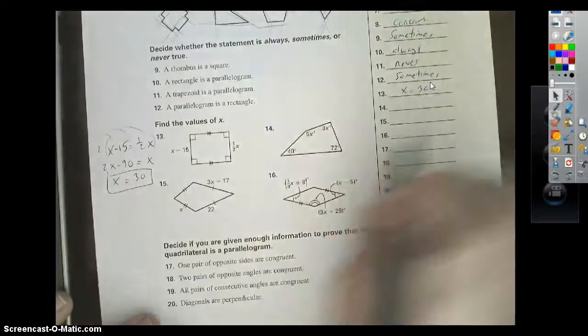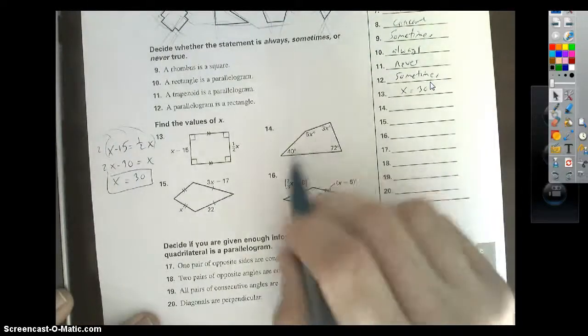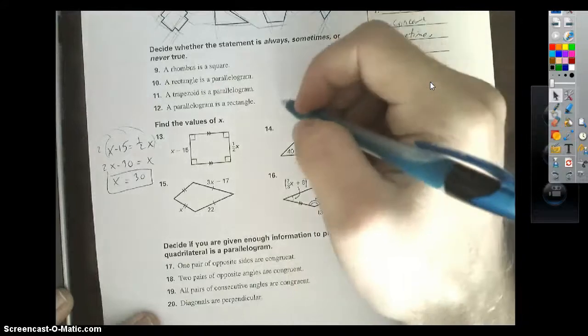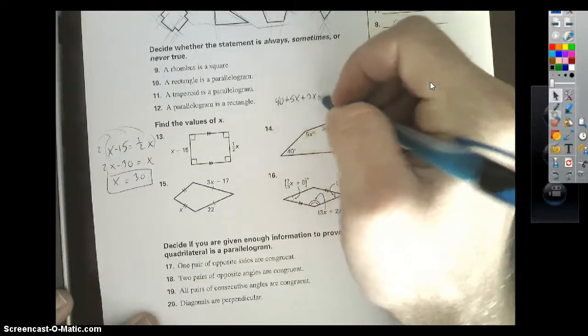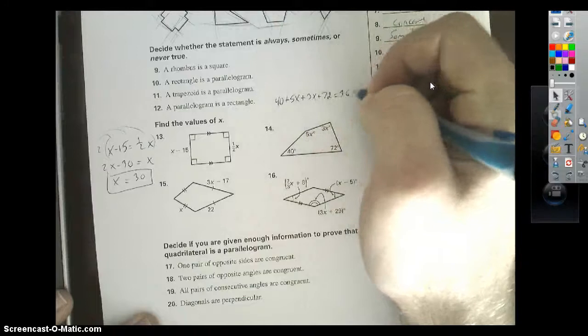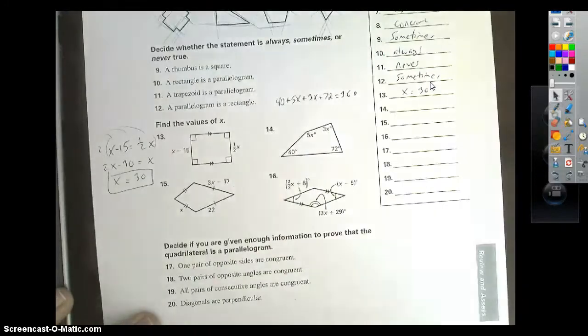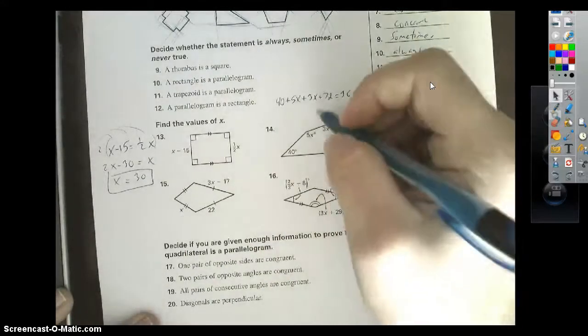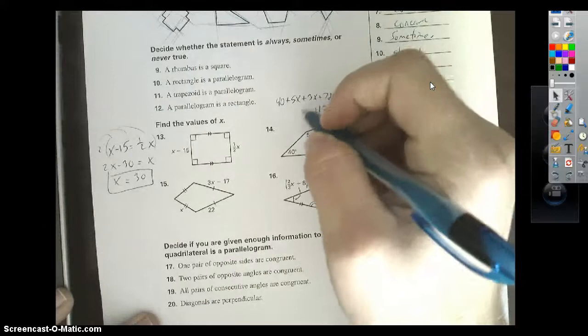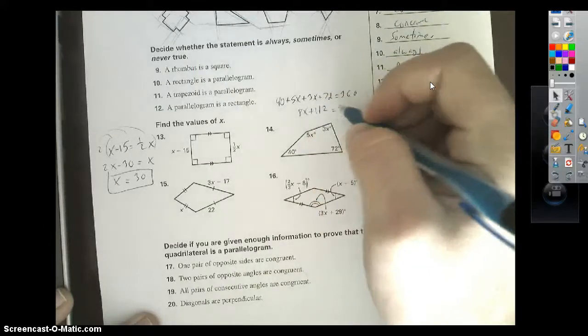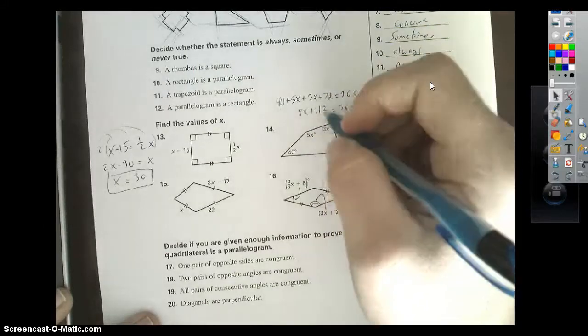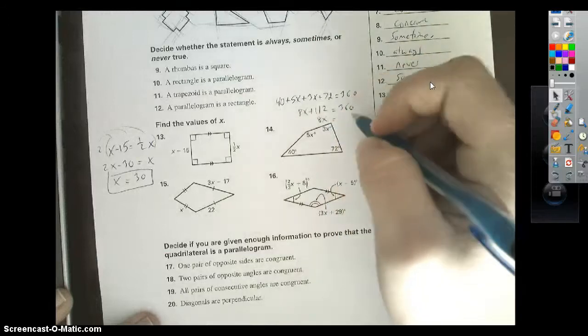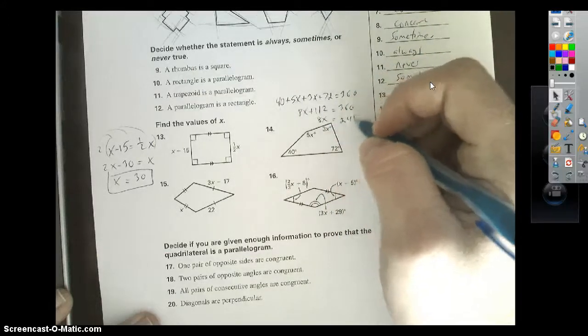Number 14. All these angles inside of a quadrilateral add up to 360. So 40 plus 5x plus 5x plus 3x plus 72 equals 360. Combine like terms. 40 and 70 gives you 112. 5x and 3x is 8x.